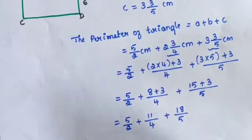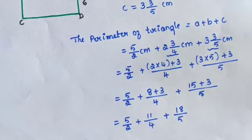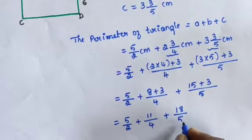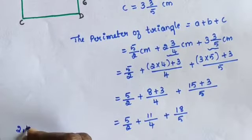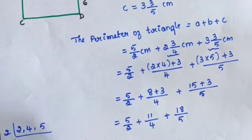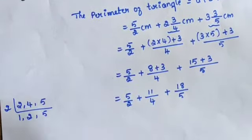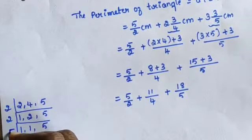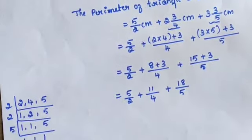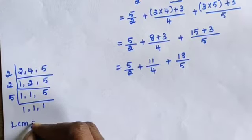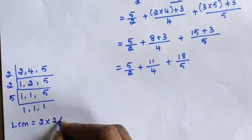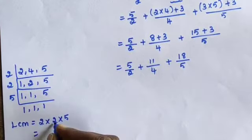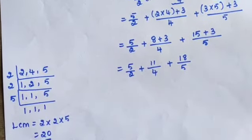The denominators are different, so find the LCM of 2, 4, and 5. Using prime factorization: 2 × 2 × 2 × 5. LCM equals 2 × 2 × 5 = 20. So LCM is 20.